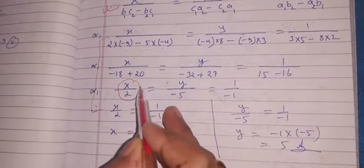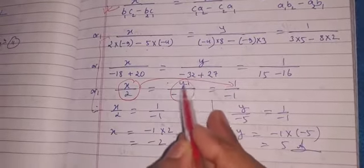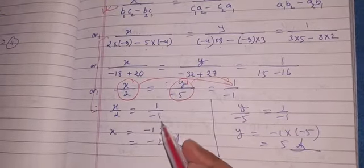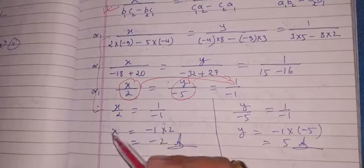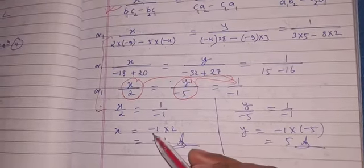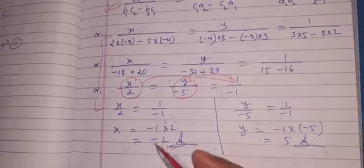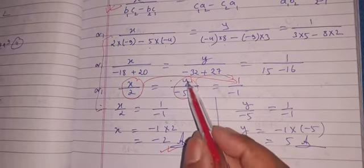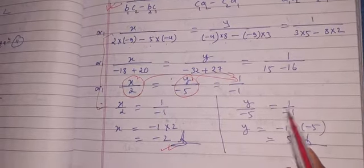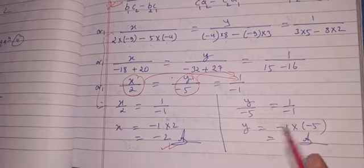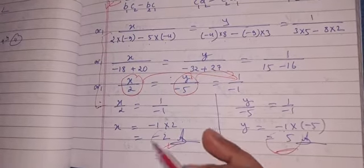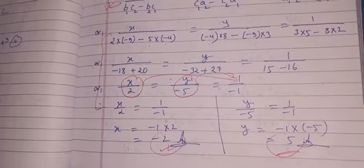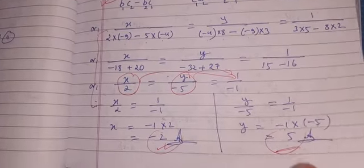So overall: x/2 = y/(-5) = 1/(-1). Equating first and last terms: x/2 = -1, so x = -2. Equating middle and last terms: y/(-5) = -1, so y = (-1)×(-5) = 5. These are the values: x = -2 and y = 5. Now we move to question number 2.